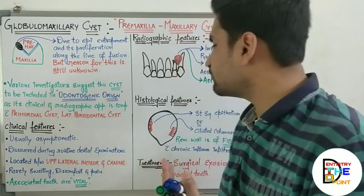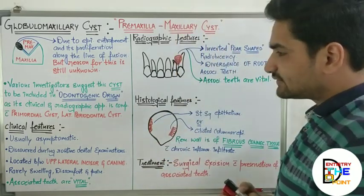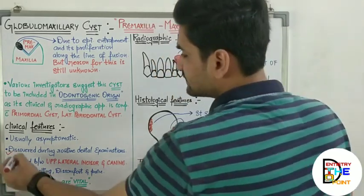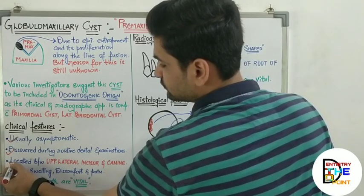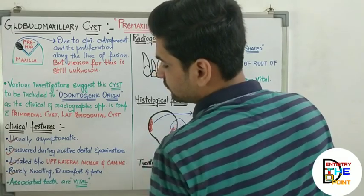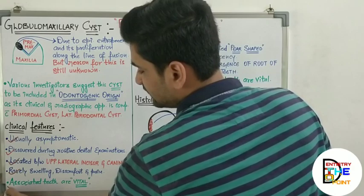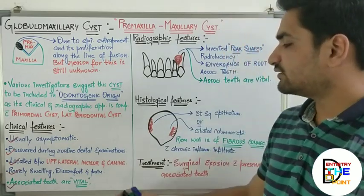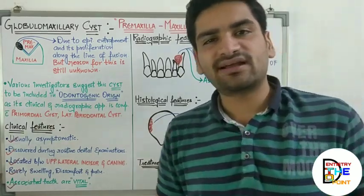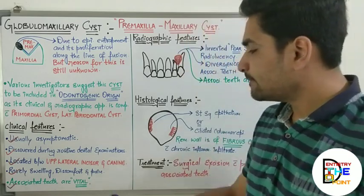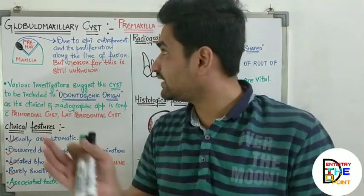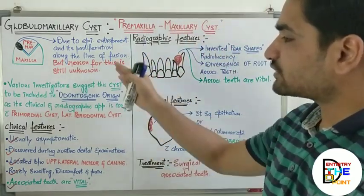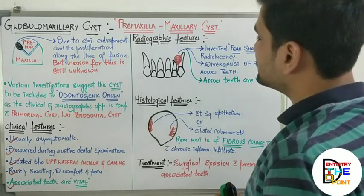It is usually discovered during routine dental examination because it is asymptomatic. Rarely you can see swelling, discomfort, and pain. The associated teeth — that is the lateral incisor or canine — are going to be vital. Rarely do the teeth get infected after the occurrence of the cyst, but in most cases the teeth associated with globulomaxillary cyst are vital.